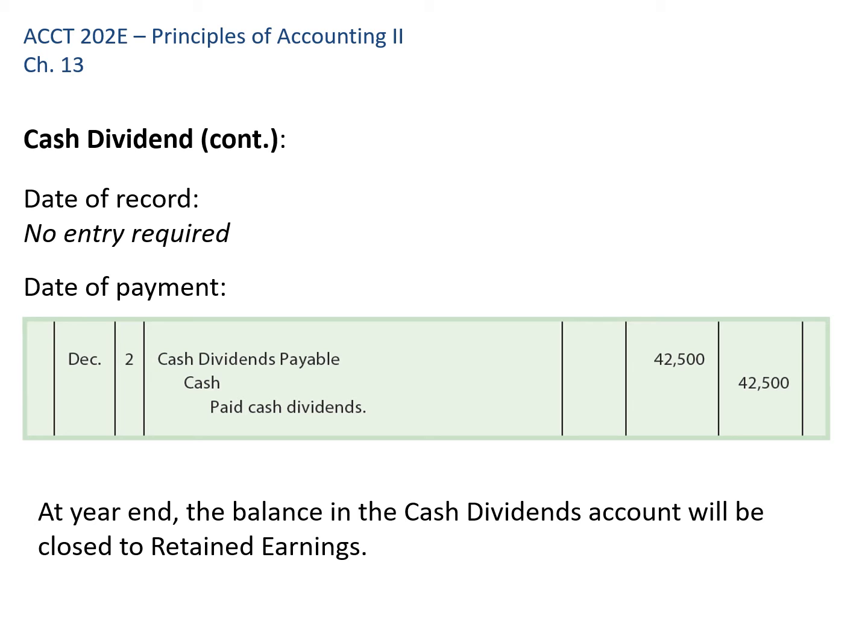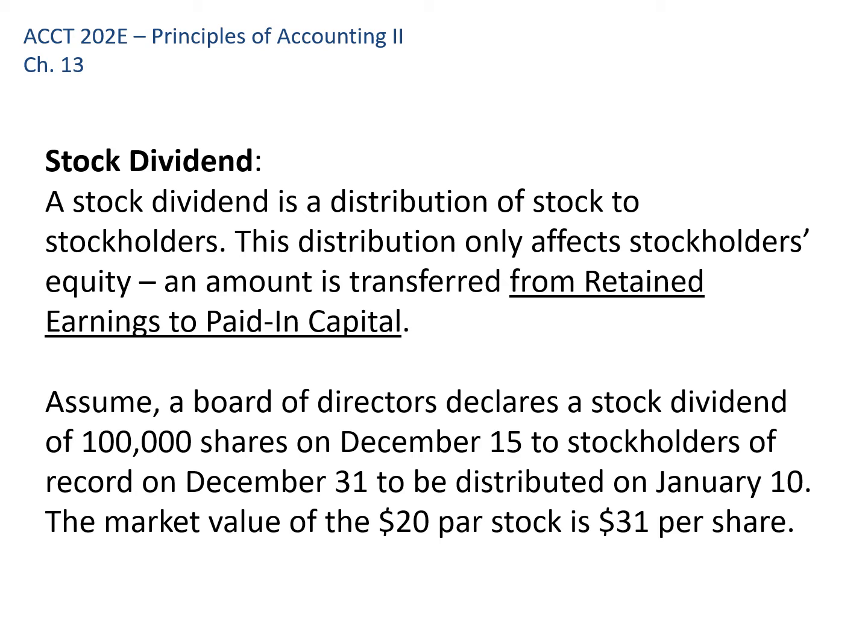At year-end, we close out the Cash Dividends account to retained earnings. Now, sometimes companies don't have much cash on hand — maybe they're in startup mode — but they want to reward shareholders. They can do that by issuing additional shares of stock, giving shareholders something of value without depleting cash. When this happens, there's no current liability and no cash outflow. It's really just transferring a portion of stockholders' equity from retained earnings to paid-in capital. Assume the board declares a stock dividend of 100,000 shares, distributed pro-rata so every shareholder's ownership interest stays the same.